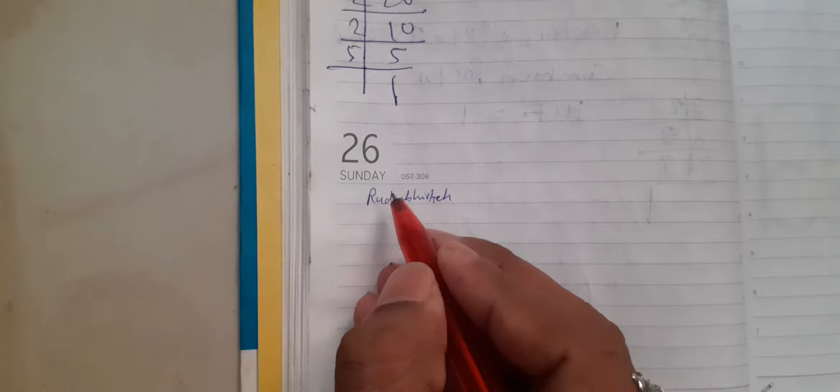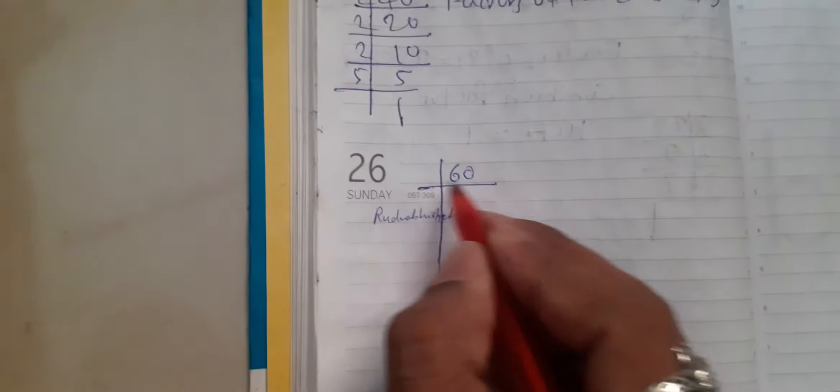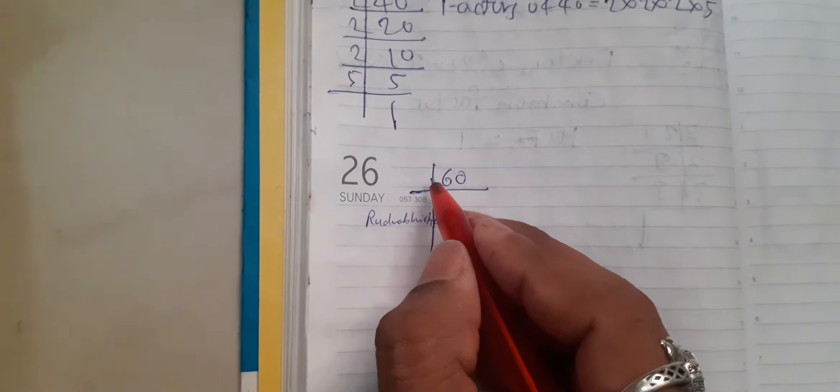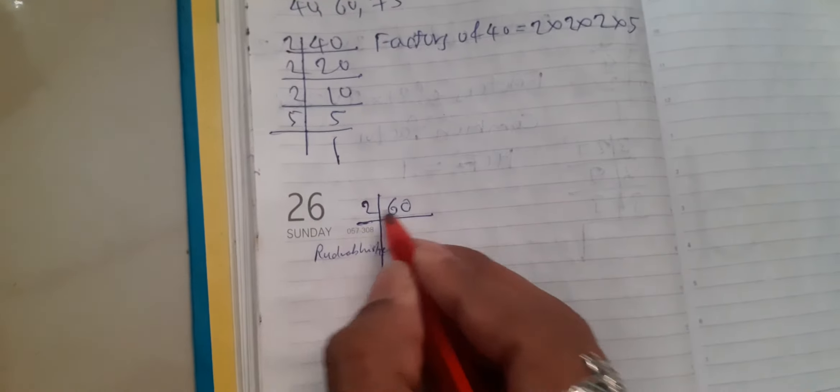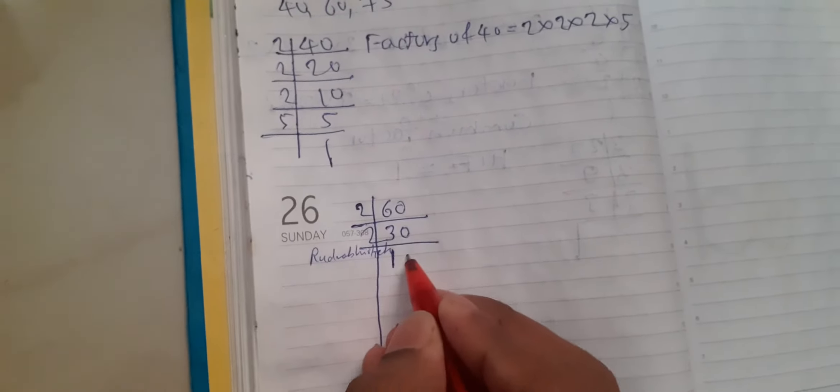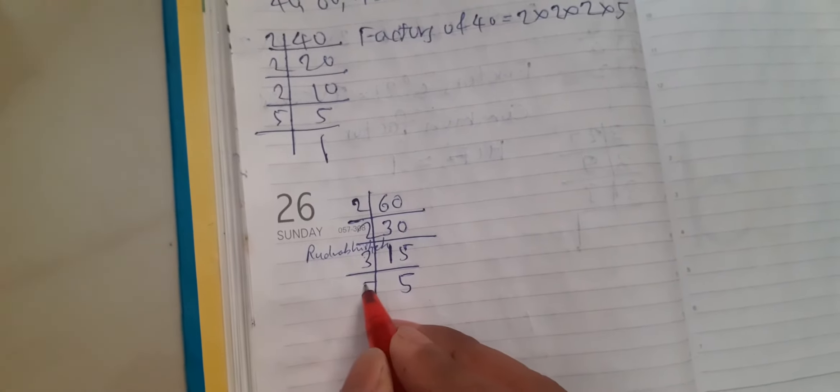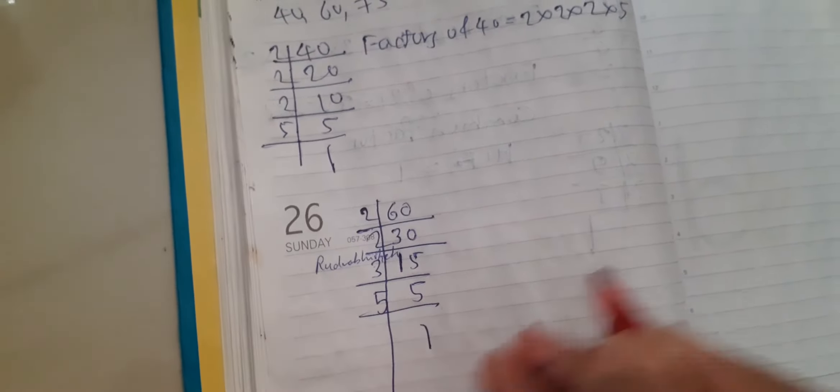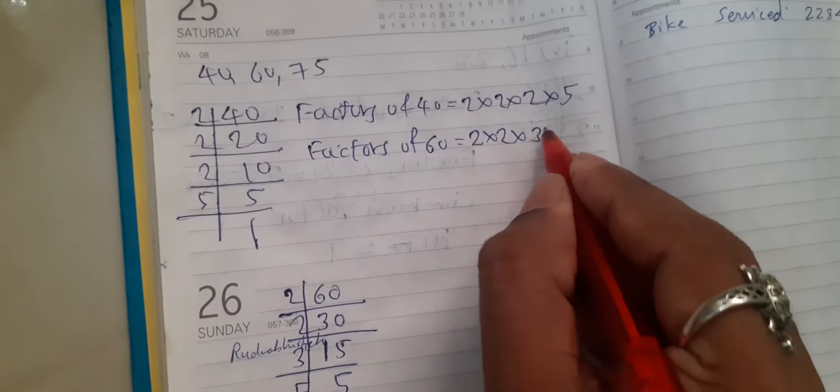Next, 60. 2 times 30 is 60, 2 times 15 is 30, 3 times 5 is 15, 5 times 1 is 5. So factors of 60 is equal to 2 into 2 into 3 into 5.